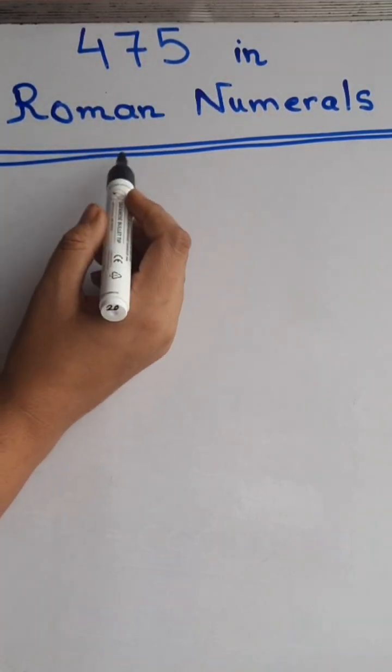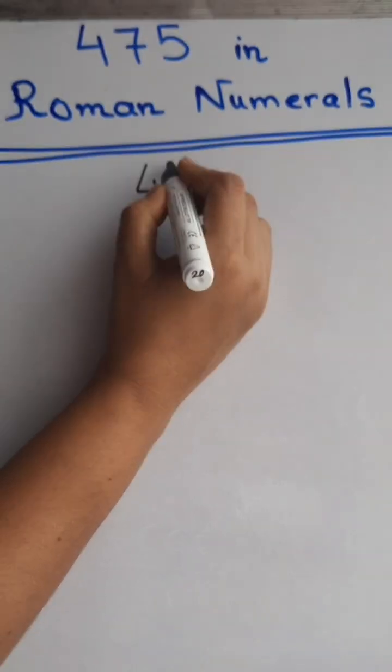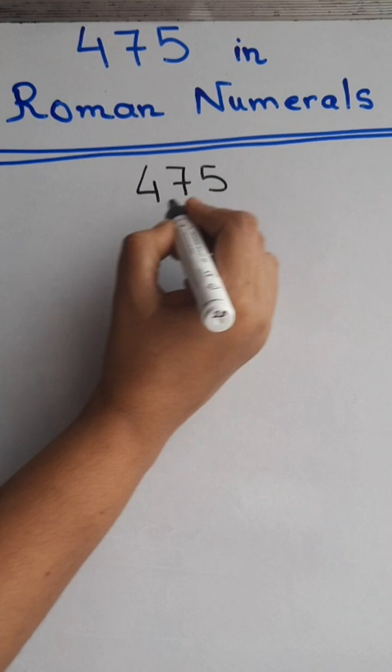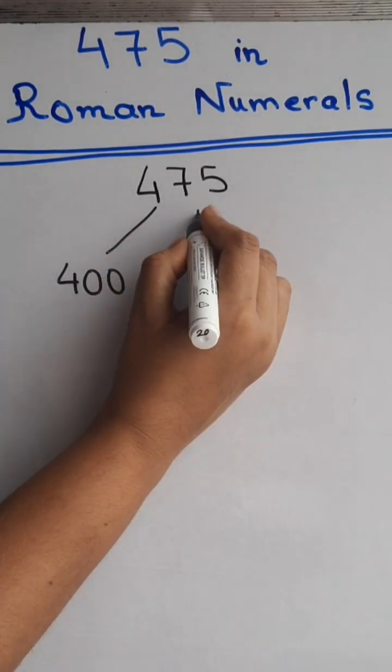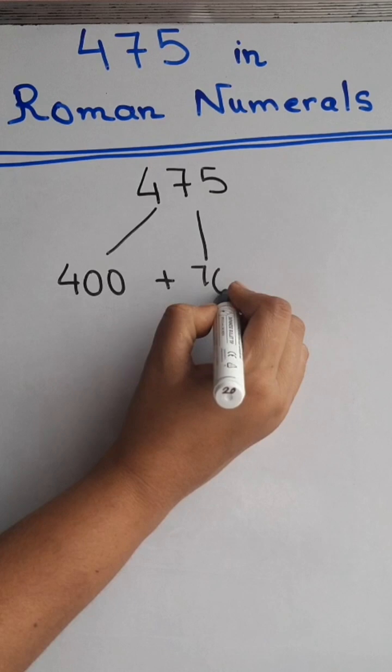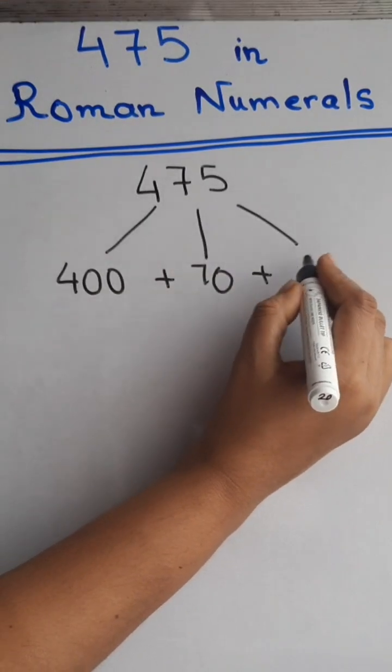Write 475 in Roman numerals. For this, we will write 475 as 400 plus 70 plus 5.